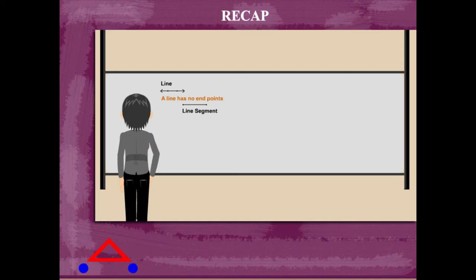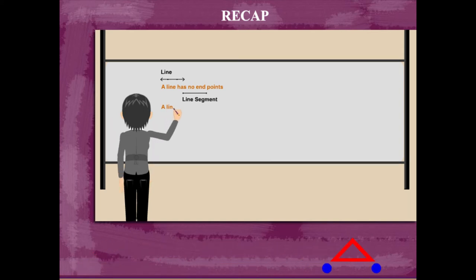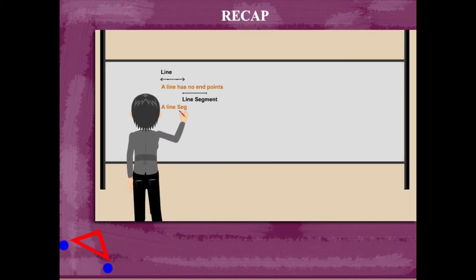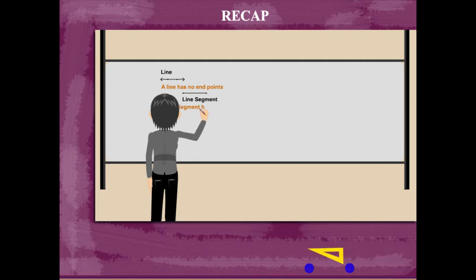But a line segment is a definite part of a line, so it has two end points.